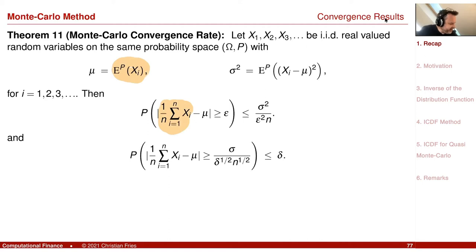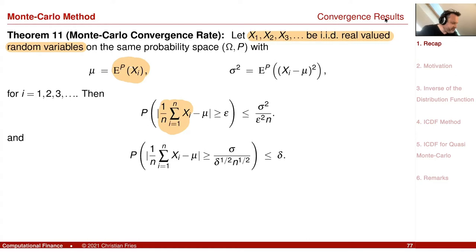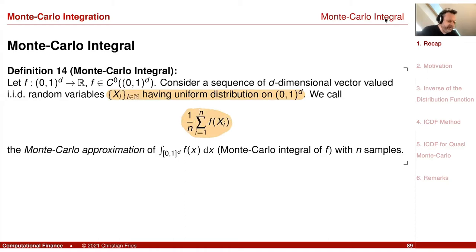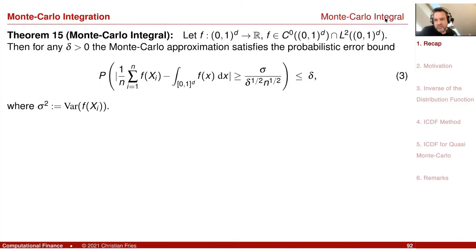All having the same distributions, so we can approximate the expectation of X. Then we switched to a special case where we looked at a sequence of uniformly distributed random variables. In that special case, our Monte Carlo approximation was an approximation of the integral, so we could translate this result — the average is now approximating an integral — and we found an integration method.